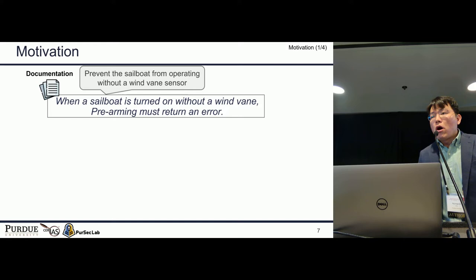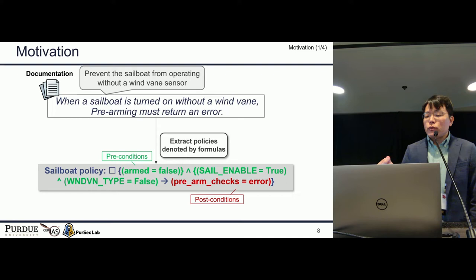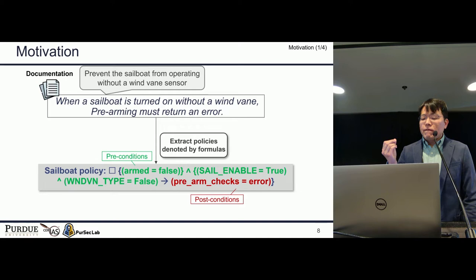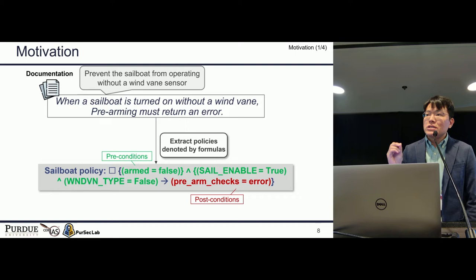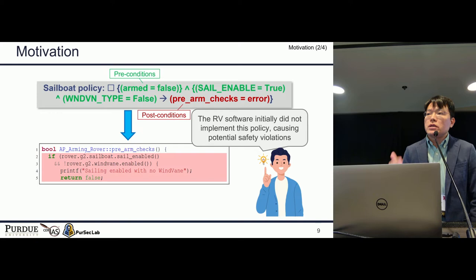In order to find logic bugs, we need to know correct versus incorrect behavior. In our previous work, we defined expected physical behavior in the form of linear temporal logic (LTL) formula, and showed this formula can guide a fuzzer to discover new logic bugs. For example, a sailboat cannot precisely navigate to a waypoint with wind direction from a wind vane sensor — a safety policy explicitly mentioned in documentation. We formally express this as an LTL formula with a pre-condition (green) and post-condition (red). We found logic bugs because the RV software initially did not implement this safety policy.